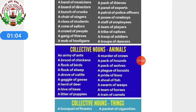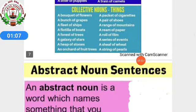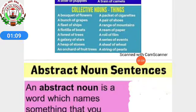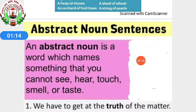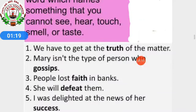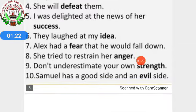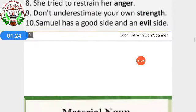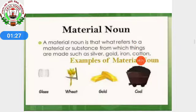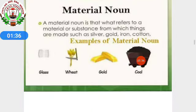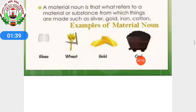A collection of people, animals, and things is known as a collective noun. Then we learnt about abstract nouns — a word which names something that you cannot see, hear, touch, smell, or taste, but you can feel — like truth, faith, idea, success, evil. Then material nouns: all the raw materials before the finished product — raw materials which we use to prepare a finished product — like wheat, gold, coal, glass.